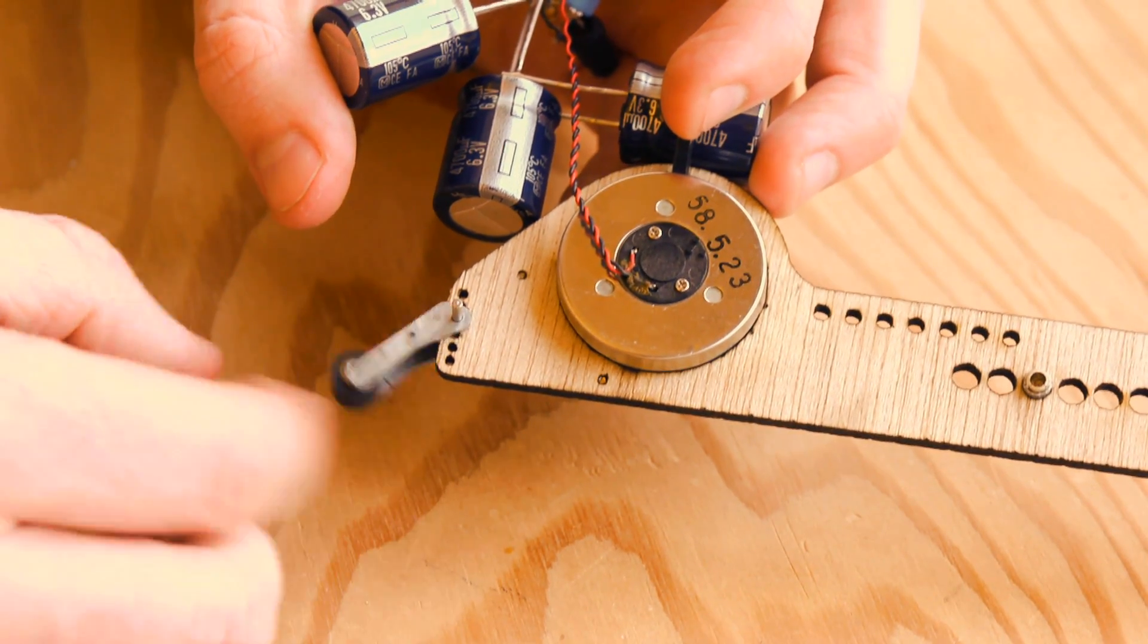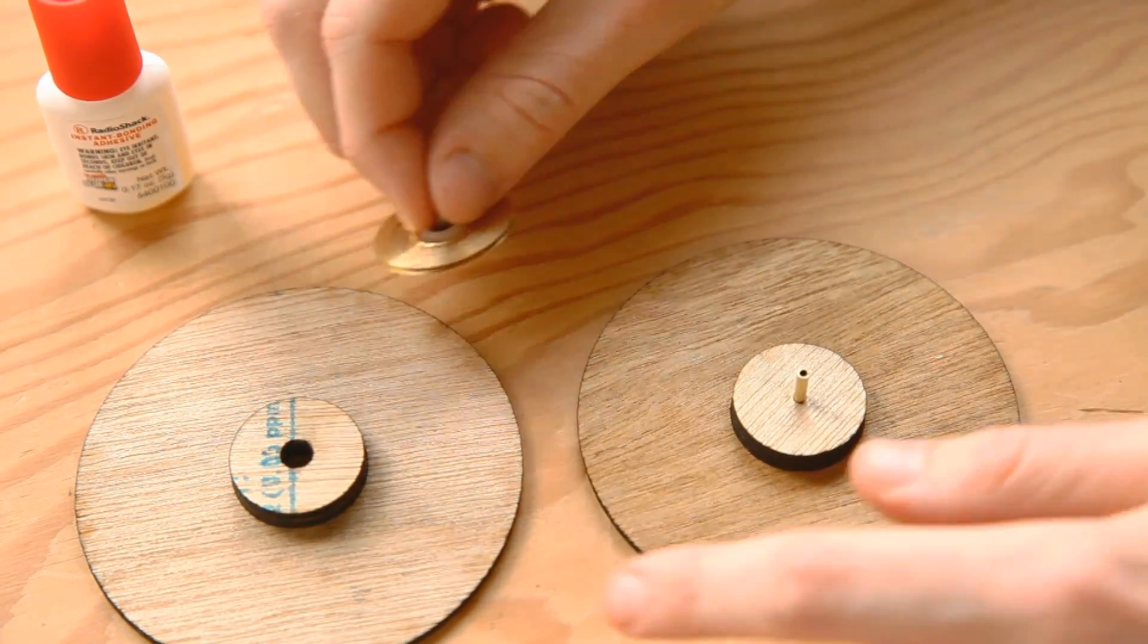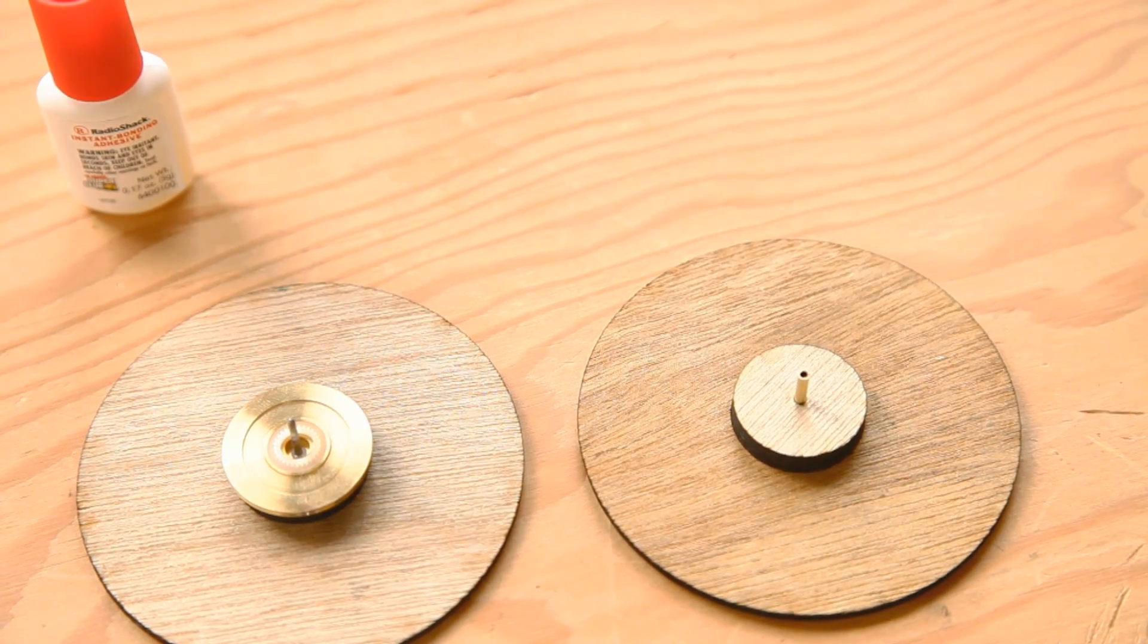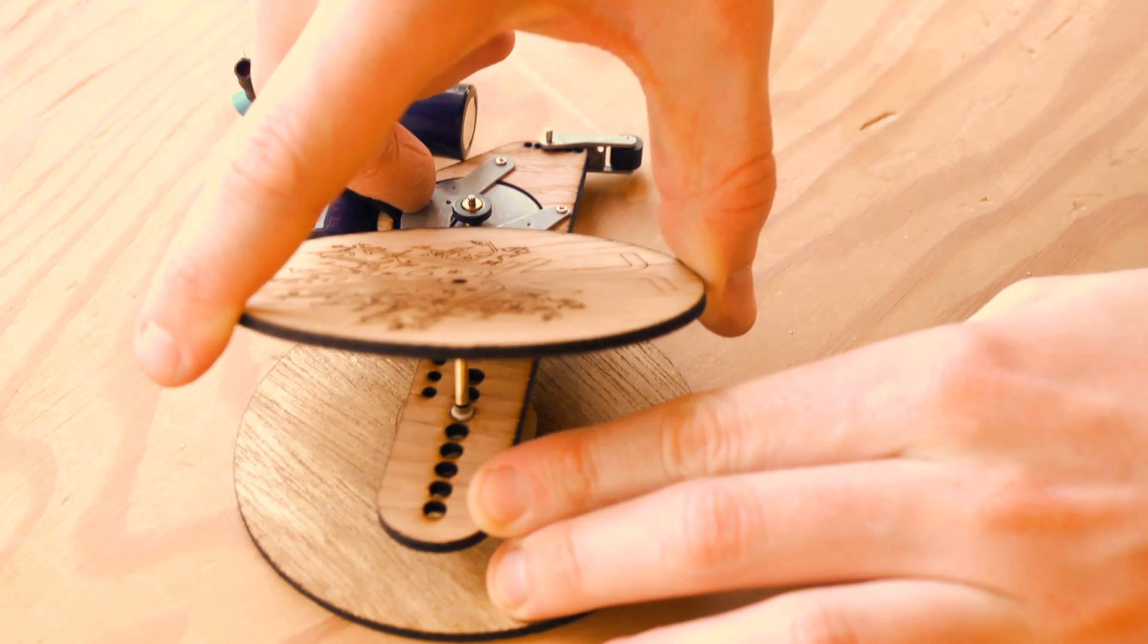Attach the rear wheel to the chariot. Build two wheels. One will have a belt pulley from the cassette player, which will be the drive wheel. Assemble your wheels so that the belt fits securely between the drive wheel and the motor.